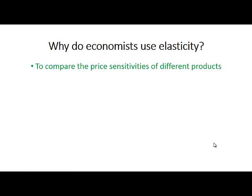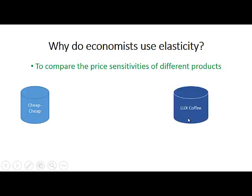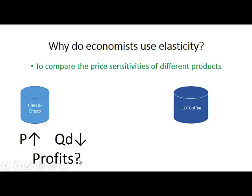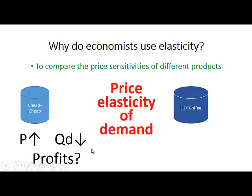Economists also use elasticity to compare the price sensitivities of different products. Suppose a producer makes two brands of coffee: a cheaper brand called Cheap Cheap and a luxury brand called Luxe Coffee. If the price of Cheap Cheap increases, the quantity demanded of Cheap Cheap will decrease. The effect on profits is uncertain — the price increase raises profits but the drop in quantity demanded lowers them. How much profits change depends on the price elasticity of demand of Cheap Cheap.